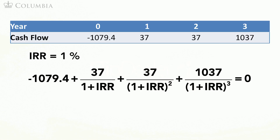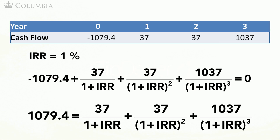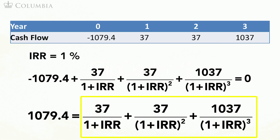Let me rearrange this formula a bit — I will simply move the $1,079.4 to the other side. Now you can see another interpretation of the IRR in this context. On the left-hand side of the equation, I have the bond price, and on the right-hand side, I have the present value of the bond's future cash flows discounted at the IRR. Therefore, the IRR is the rate of return at which the cash flows of the bond must be discounted to obtain the current bond price.